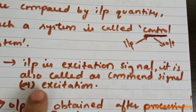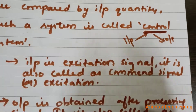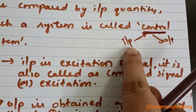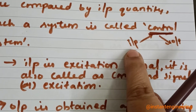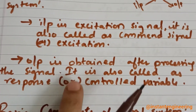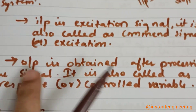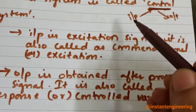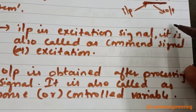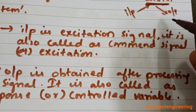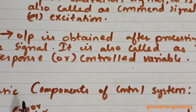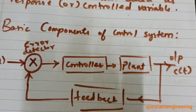When input is given, it is called an excitation signal, also called a command signal — you are giving some input signal to a system. Output is obtained after processing the signal. Whatever output we have got is called a response, and it is also called a control variable.